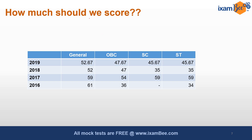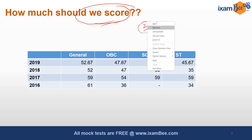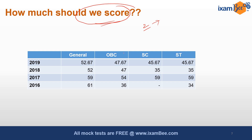Coming to the main question students are asking — how much should we score? The paper was quite lengthy, especially considering the 2-marker numericals, and students were left with very little time. Students are worried about how much they need to score to clear the cutoff. Looking at previous cutoffs, the ABC cutoff was high in initial years, but now it is somewhere around 52 for the general category.